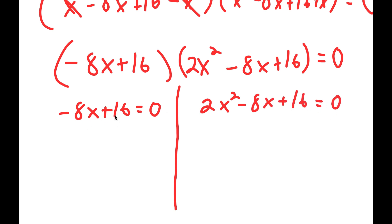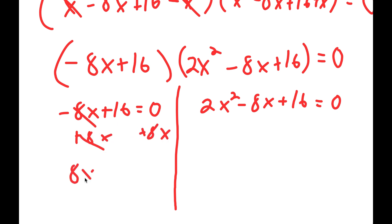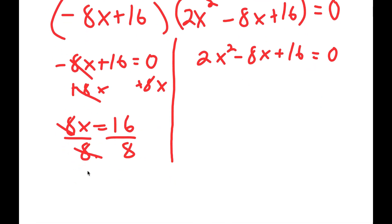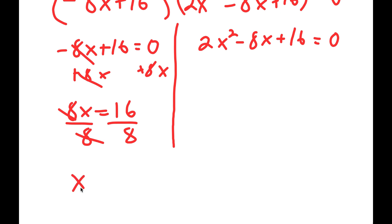For negative 8x plus 16 is equal to 0, I can add 8x on both sides, so these cancel out and I get 8x is equal to 16. Now if I divide both sides by 8, these cancel out and I get x is equal to 16 divided by 8, which is equal to 2.